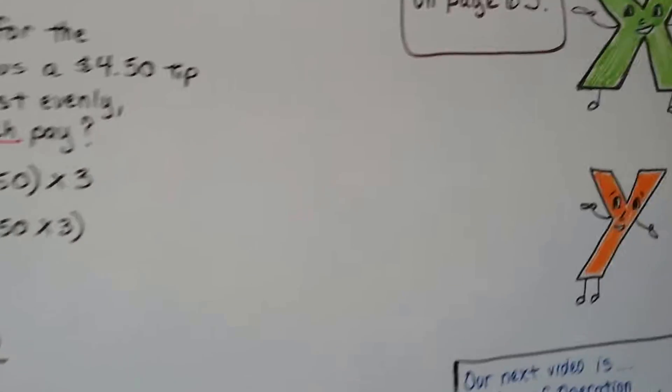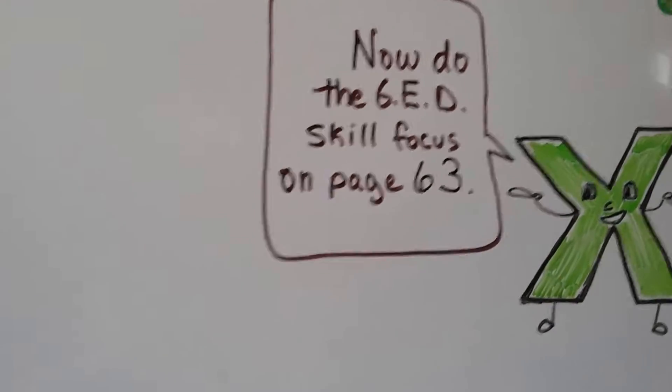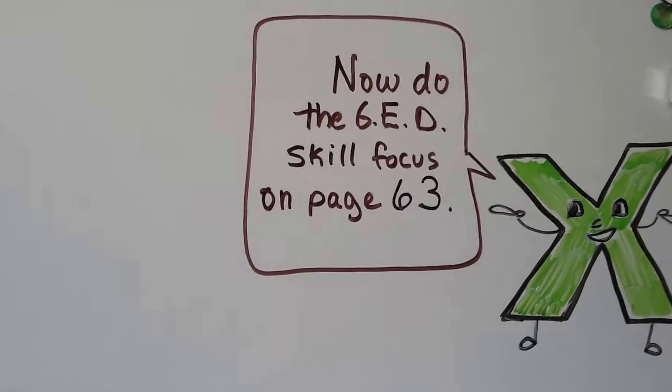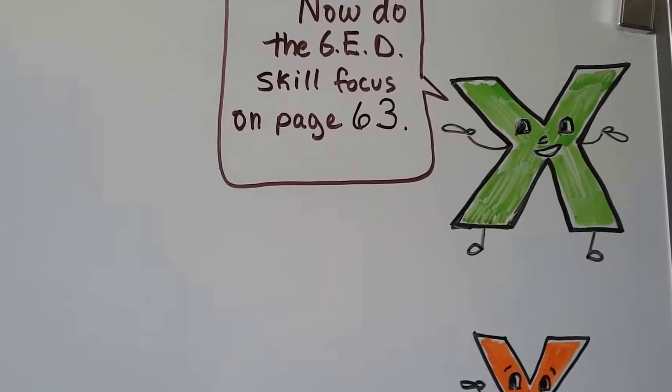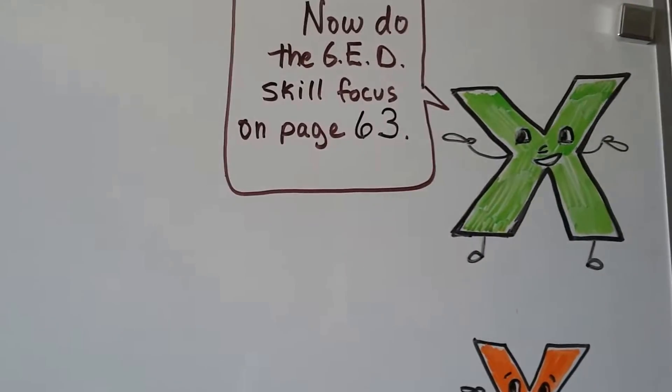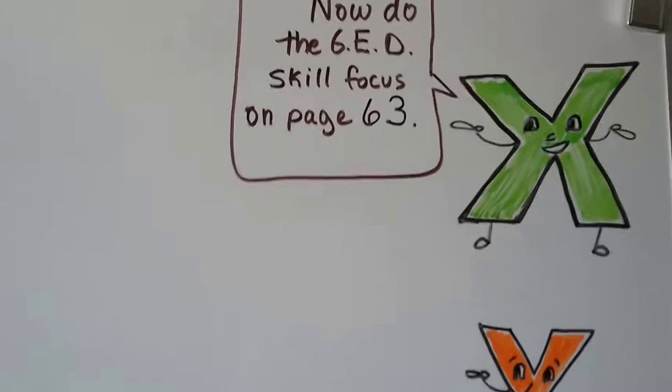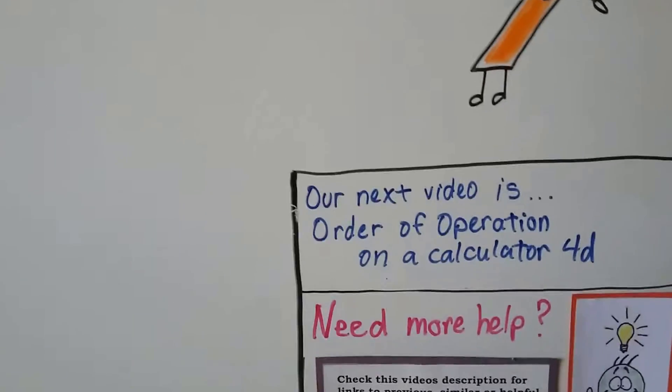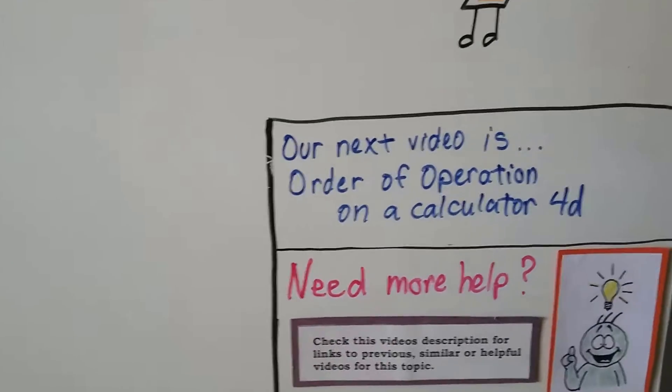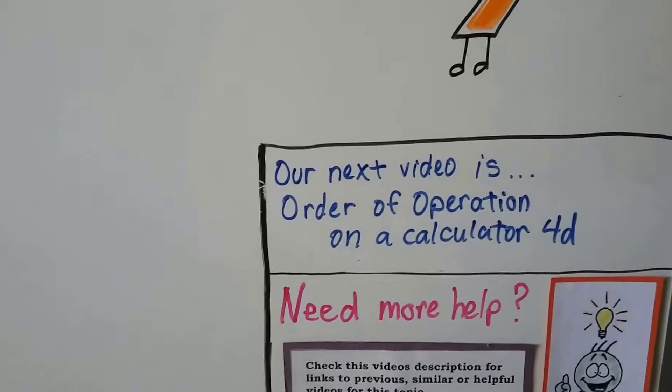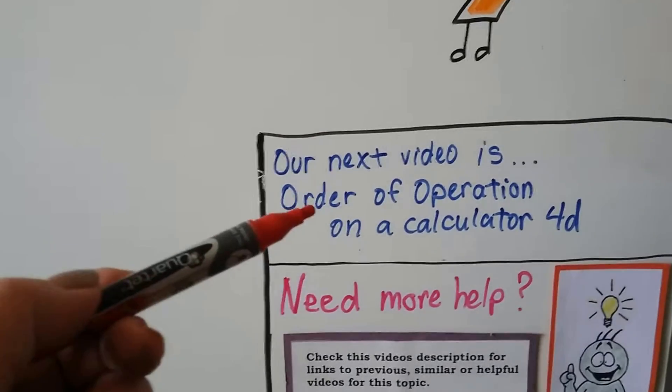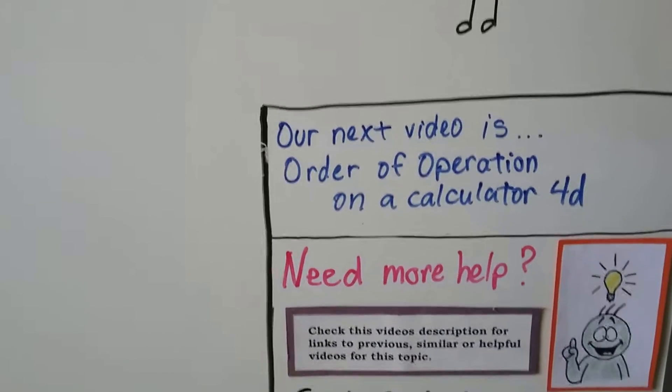So you should now be ready to do this GED skill focus on page 63. If you have any trouble when you're doing it and you don't understand anything, go back. Go back and retrace your steps and try to fill in. The next video is order of operations on a calculator. That's lesson 4D. Then after this video, we're going to get into lesson 5 in fractions.